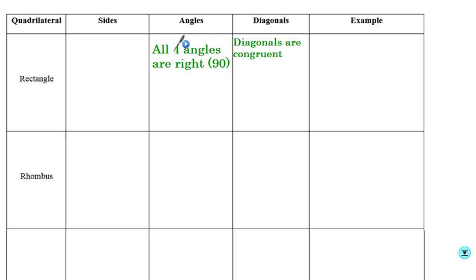So in a rectangle, there's nothing new about the sides. The sides we still know are opposite sides are congruent, and opposite sides are parallel — nothing new there. However, the new properties of a rectangle are that all four angles are 90-degree angles. If I draw a rectangle, all of these angles are 90 degrees.